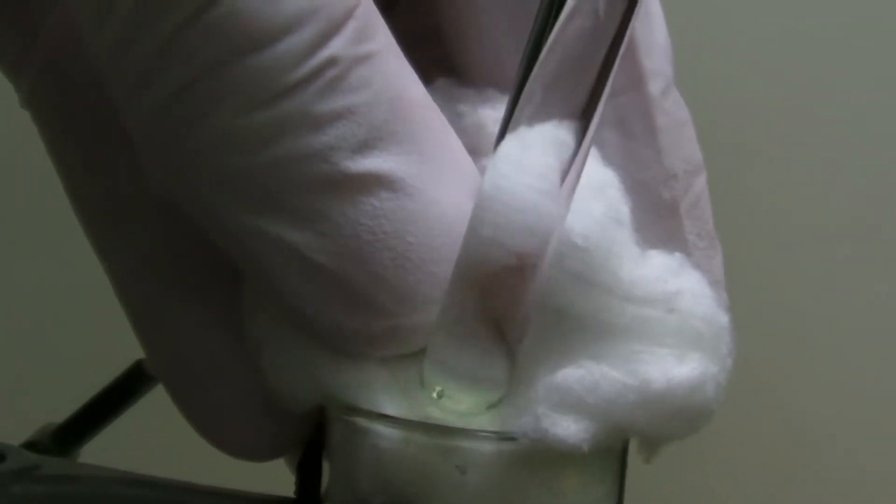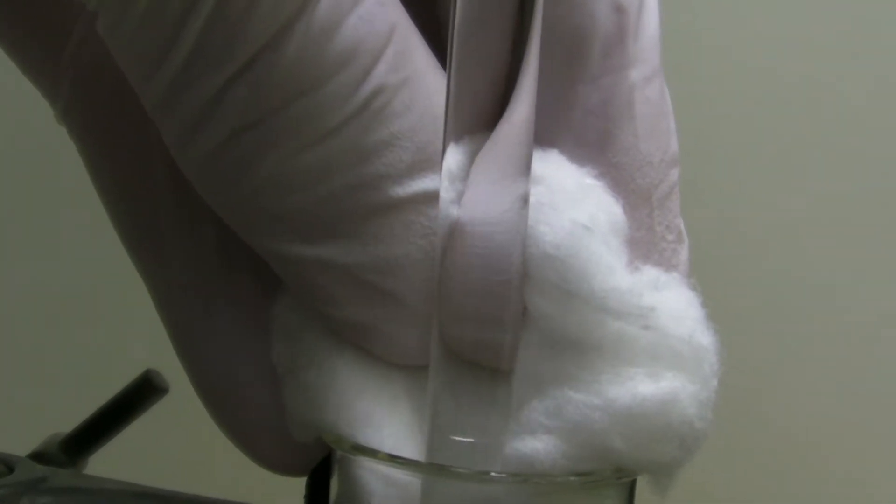Then a glass rod is poked through the cotton wool which has to be long enough to reach to the bottom of the tube.